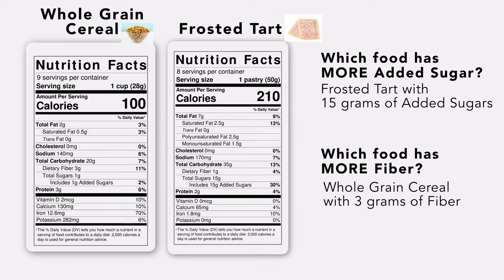Remember, foods with low or no added sugar and lots of fiber help our bodies more than foods with lots of added sugar and low or no fiber. Some examples of foods with fiber are whole grains, fruits, and vegetables.